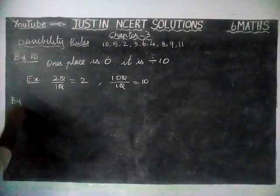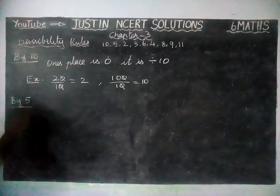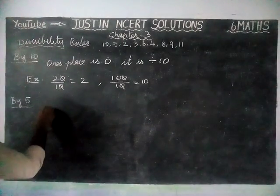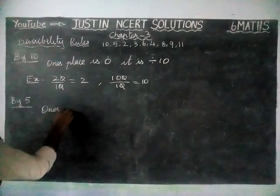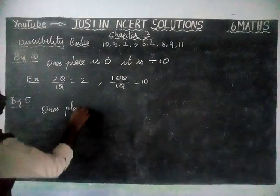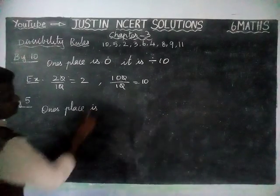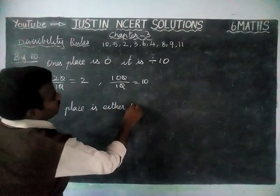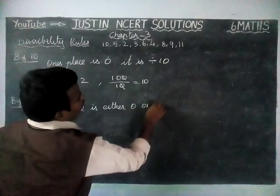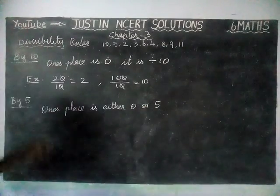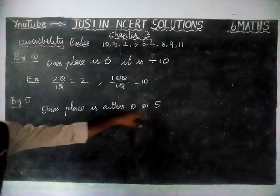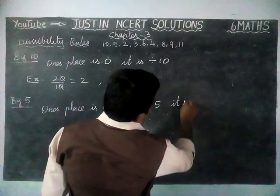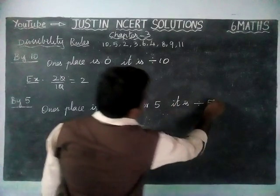Next, divisibility by 5. If the 1's place is either 0 or 5, then it is divisible by 5.